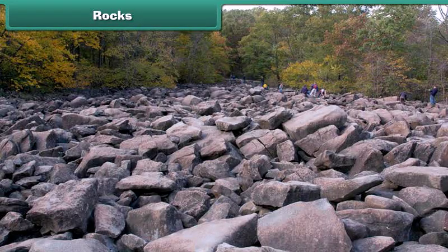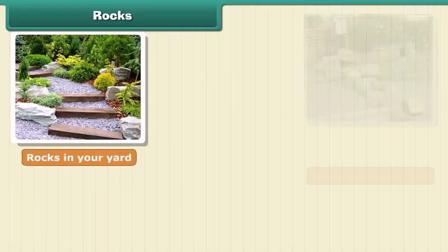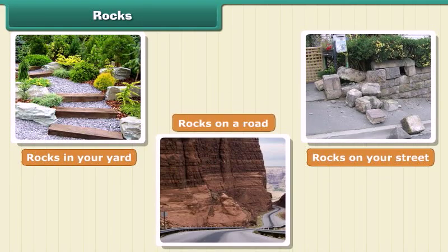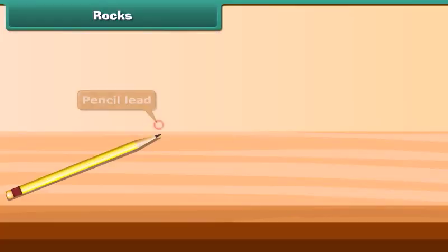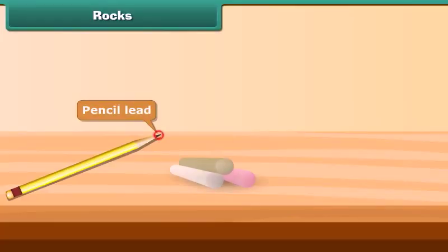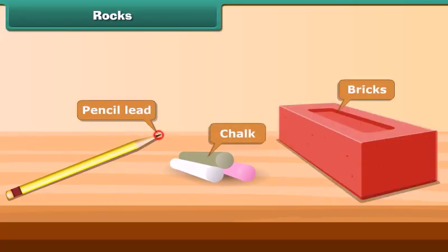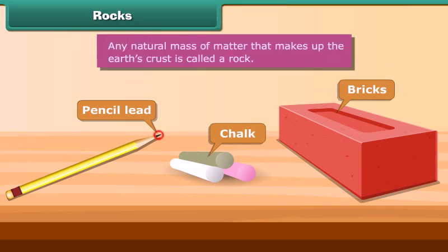Rocks are all around us. You can see rocks in your yard, on your street, on a road, everywhere you look. Pencil lead, chalk, and bricks are all rocks. Any natural mass of matter that makes up the earth's crust is called a rock.